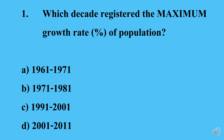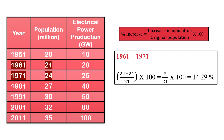The first question is: which decade registered the maximum growth rate percentage of population? We first have to calculate the growth rate percentage of each decade. The formula is: increase in population divided by the original population, into 100. For option A, 1961-1971, the increase is 24 minus 21, divided by the original population in 1961, which is 21, into 100. We get 3 divided by 21 into 100, which equals 14.29%.